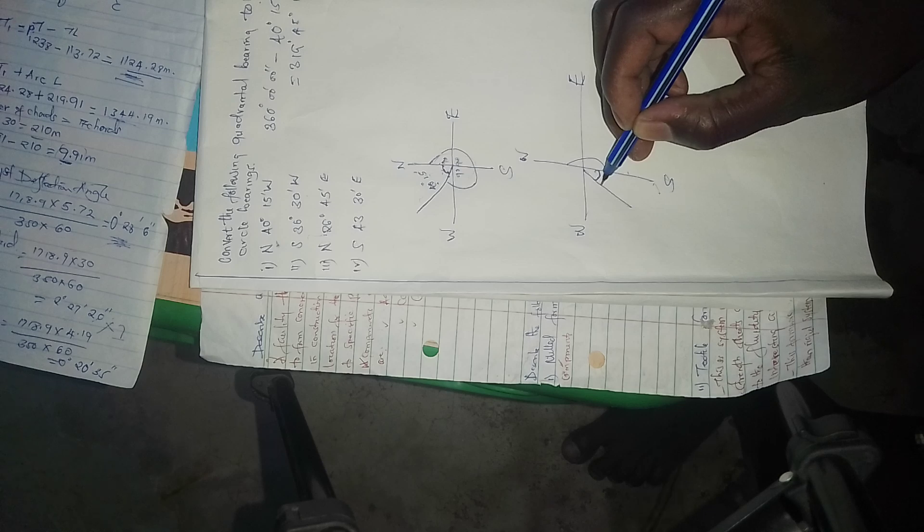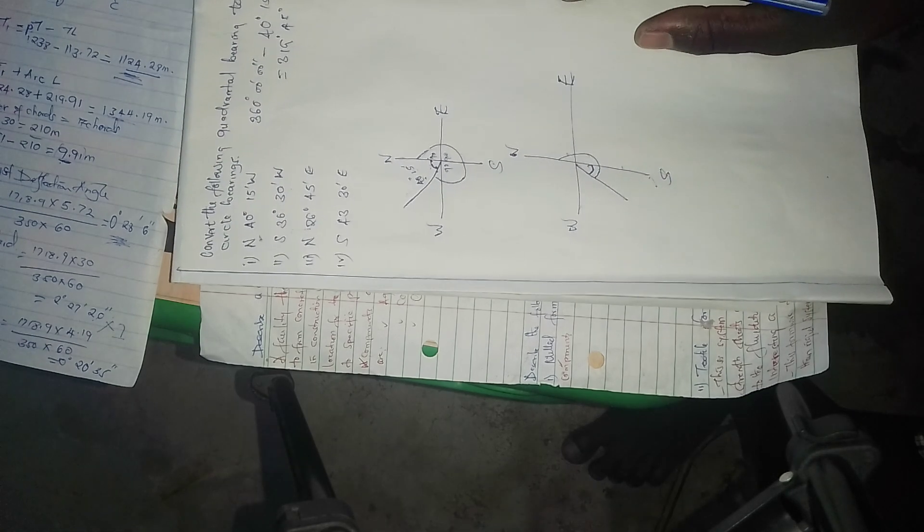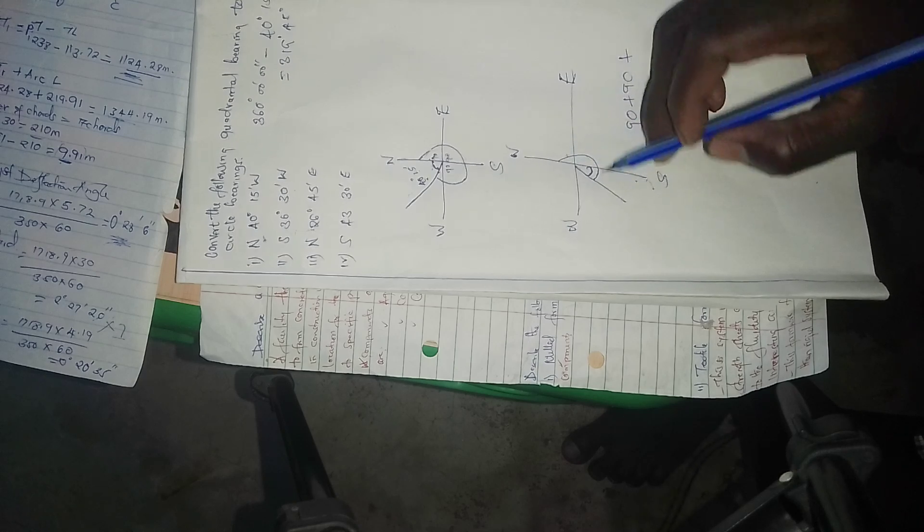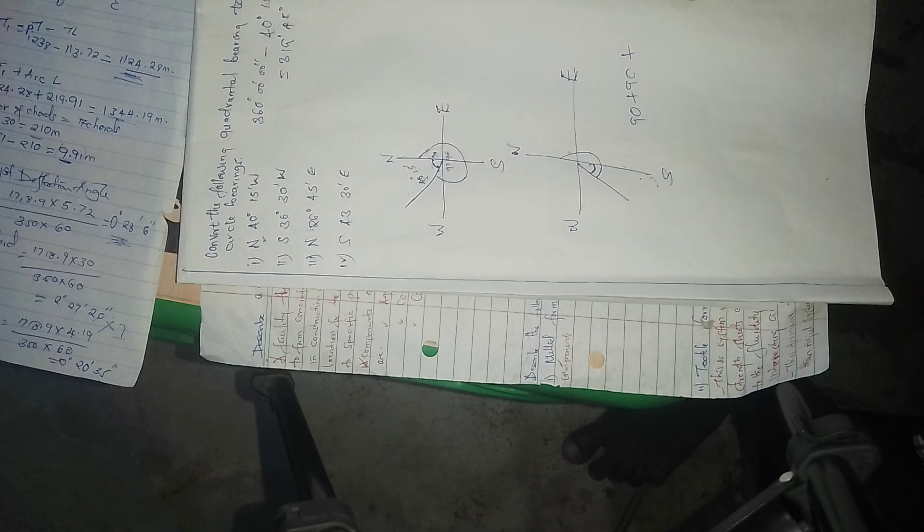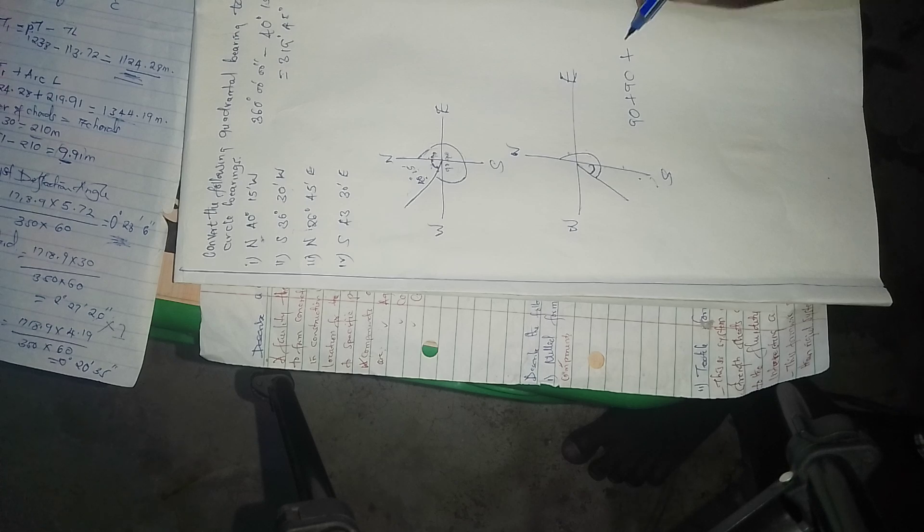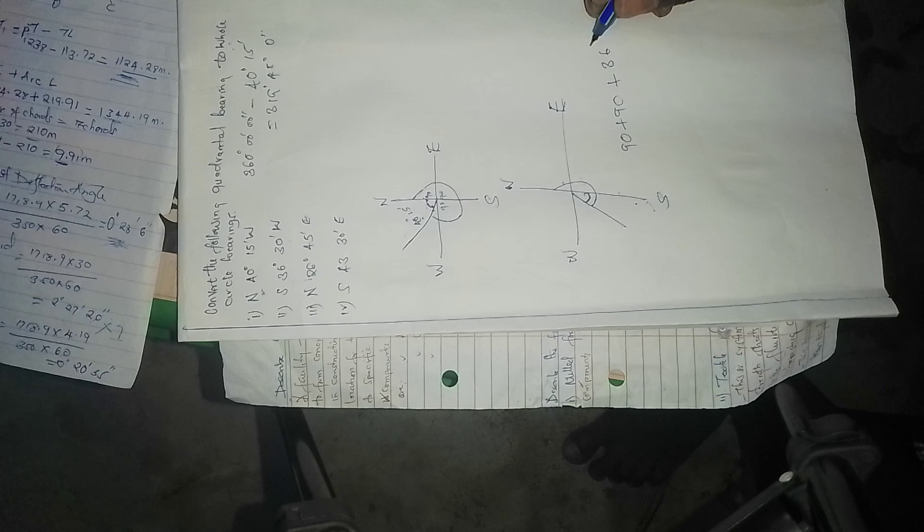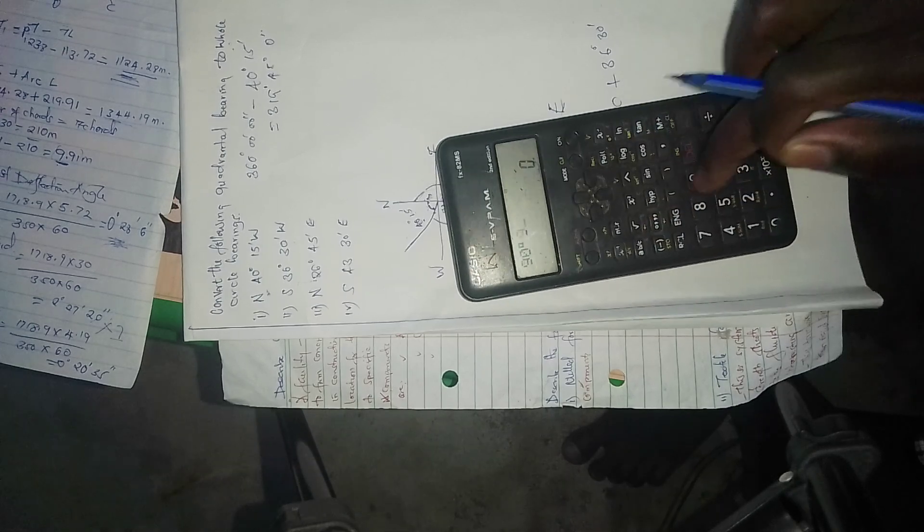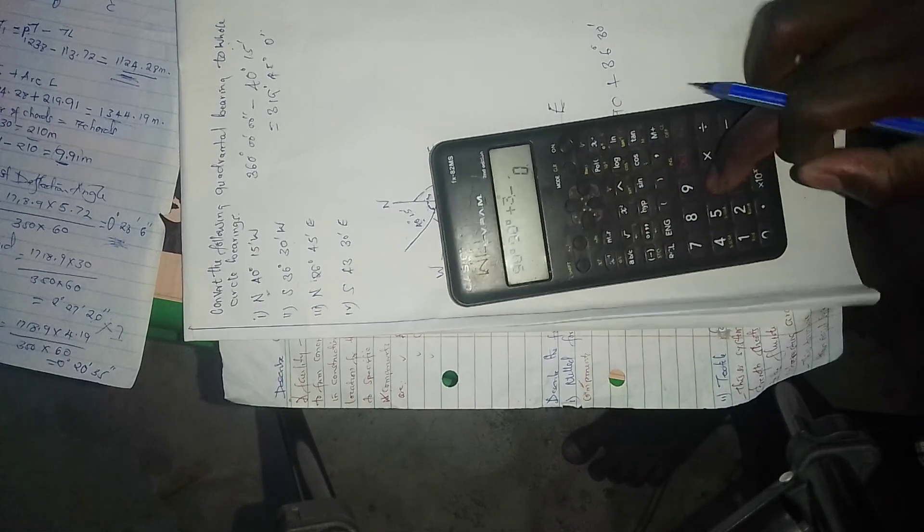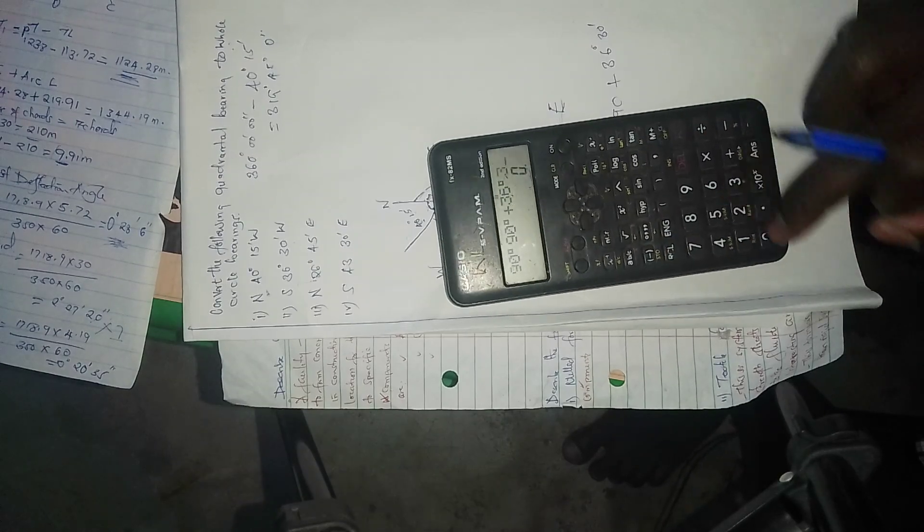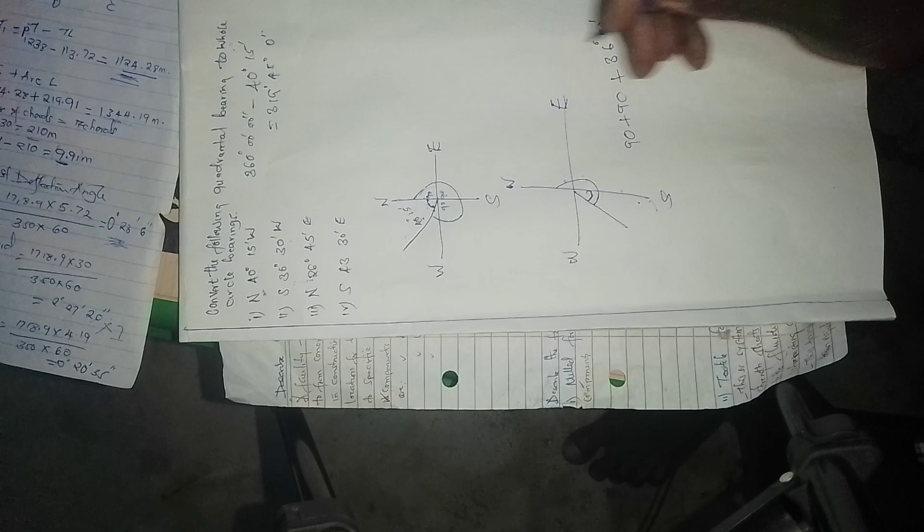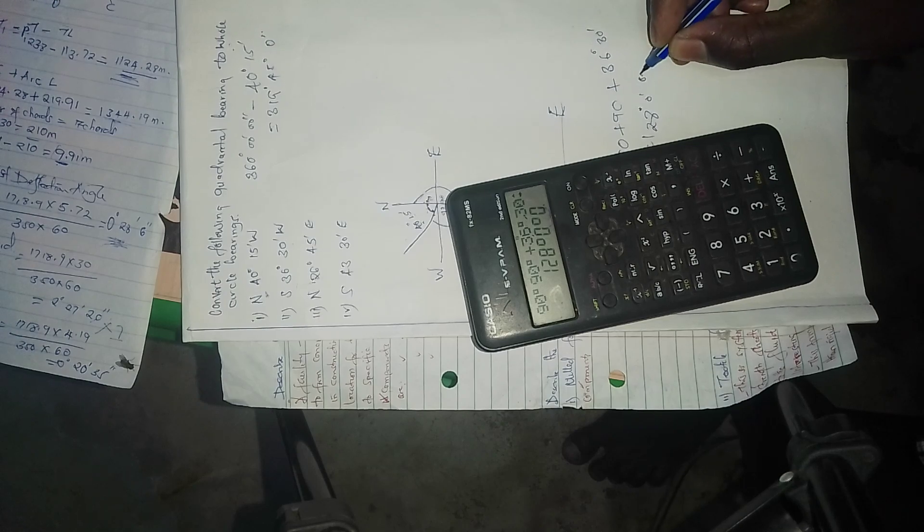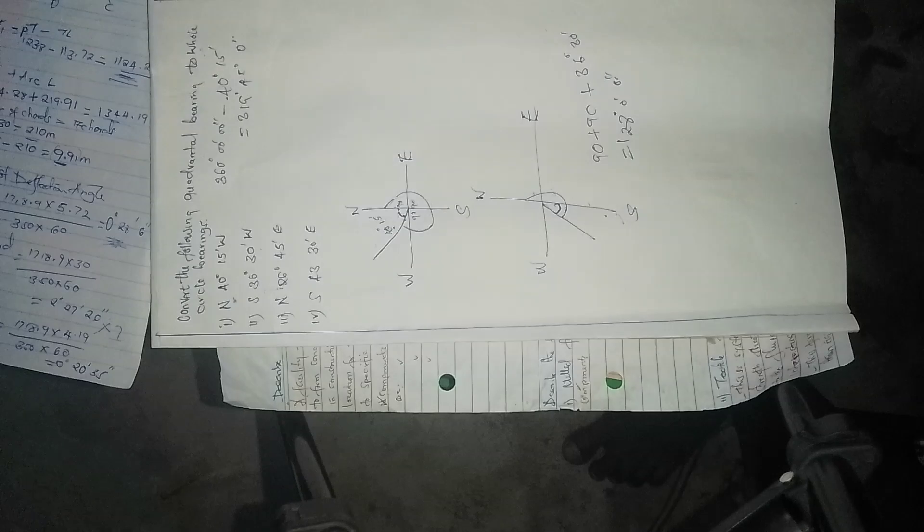So we say 90 degrees plus 90 degrees plus this given one which is 26 degrees 30 minutes, which equals 186 degrees 30 minutes. That's the second one.